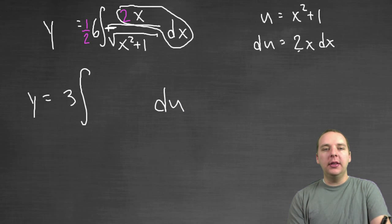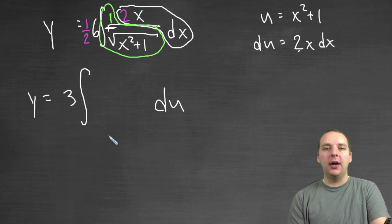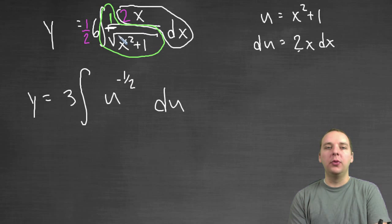Now this part in green that I'm circling right here, 1 over the square root of x squared plus 1, that's 1 over the square root of u, which I will more conveniently write as u to the negative 1 half. The negative is because the radical is in the denominator, and the 1 half is because it's a square root. A square root is equivalent to a 1 half power. Do that integration.